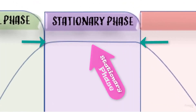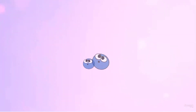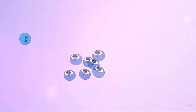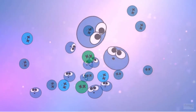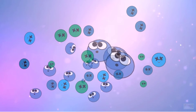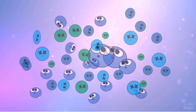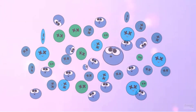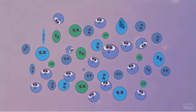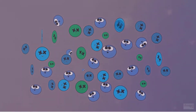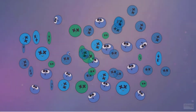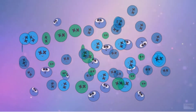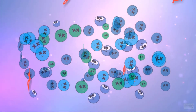In the stationary phase, we see that there is no real change in the number of bacteria in the cell culture. This is because the number of bacteria cells in our cell culture remains fairly constant, due to the fact that the number of cells being created will roughly be equal to the number of cells dying in our cell culture.